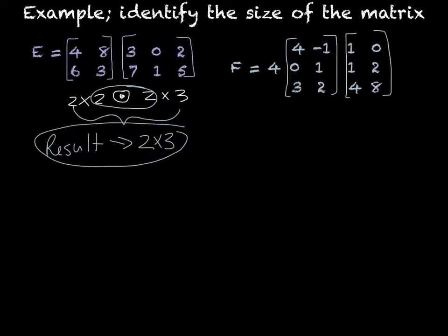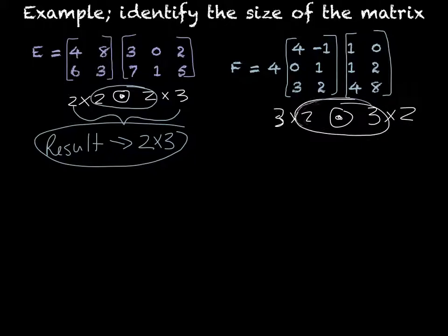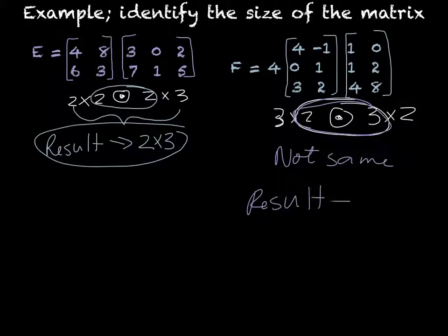Last example, we see F equals four times the matrix four negative one zero one three two, times one zero one two four eight. So we're multiplying a constant by a matrix, so that's going to be the same size it originally was, which is a three row by two column, and we're trying to multiply that times a three row by two column. We look at the inside ones and we see that they are not the same, so the result is no solution.